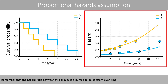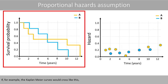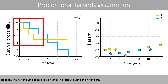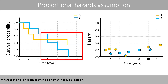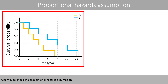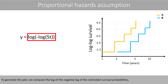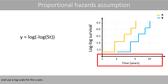Remember that the hazard ratio between two groups is assumed to be constant over time. If, for example, the Kaplan-Meier curves would cross, it would be hard to argue that the hazard ratio is constant, because the risk of dying seems higher in group A during the first years whereas it seems higher in group B later on. One way to check the proportional hazards assumption is to generate a log-minus-log plot and check if the curves are parallel. To fulfill the proportional hazards assumption, the curves should be approximately parallel. To generate this plot, we compute the log of the negative log of the estimated survival probabilities and use a log scale for the x-axis.